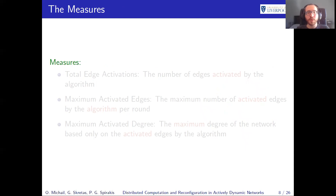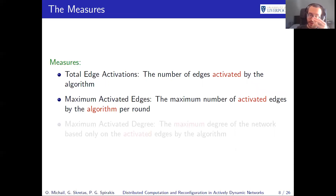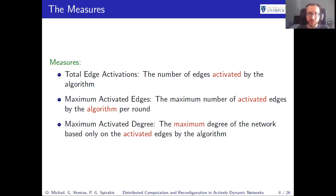We introduced new measures. The first is total edge activations: the total number of edges activated by the algorithm. The second is maximum activated edges per round: the maximum number of edges activated by the algorithm in any single round. Note that we do not count edges that existed in the initial network, only those activated by the algorithm. Similarly, the activated degree is the maximum degree based only on edges activated by the algorithm, over all rounds — again not counting initial network edges.